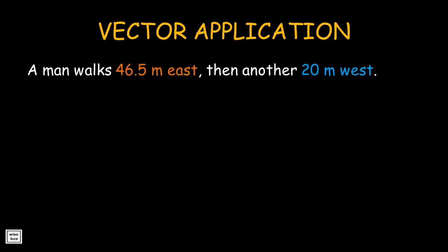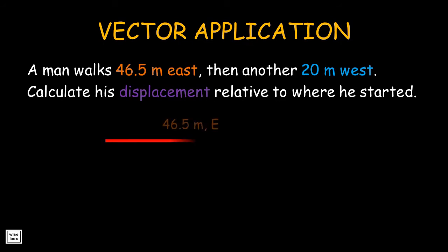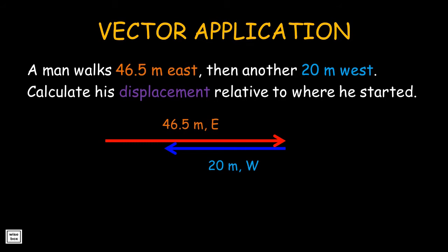Let's have an example. A man walks 46.5 meters east, then another 20 meters west. Calculate his displacement relative to where he started. This is the first vector, then the second vector. Notice that they point in opposite directions — one is pointing east and the other is pointing west. Since the vectors point in opposite directions, we can simply subtract their magnitudes. Here is the resultant: subtracting magnitudes, 46.5 minus 20, we get 26.5 meters east.